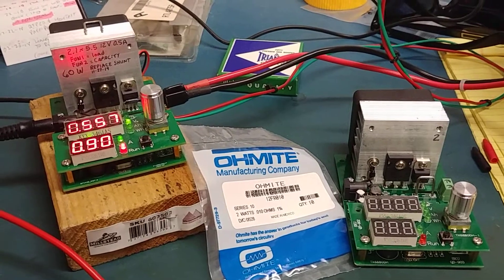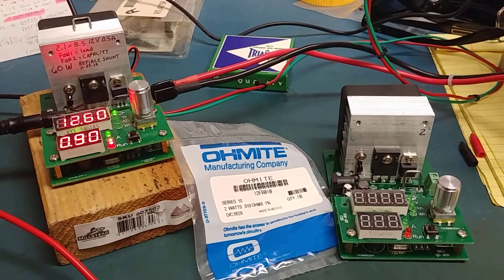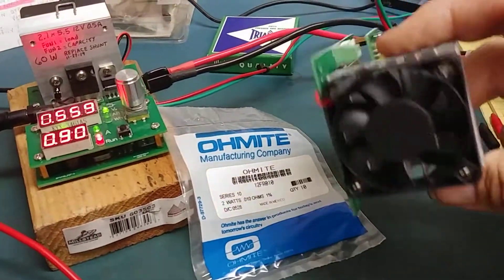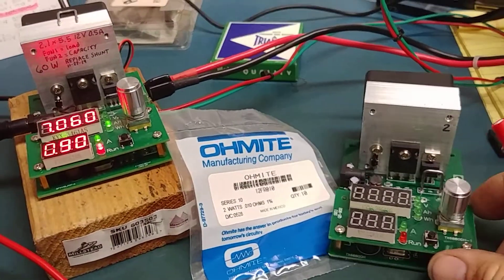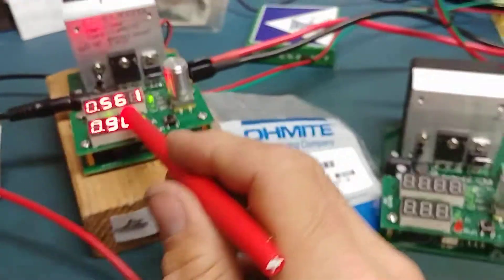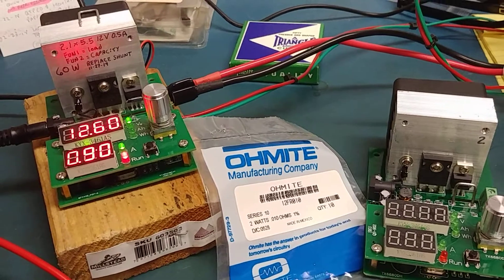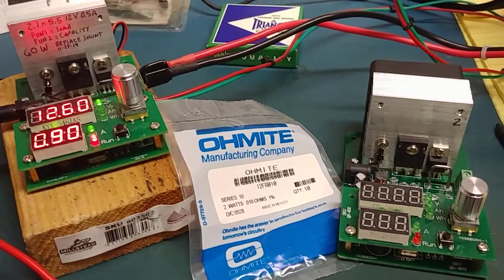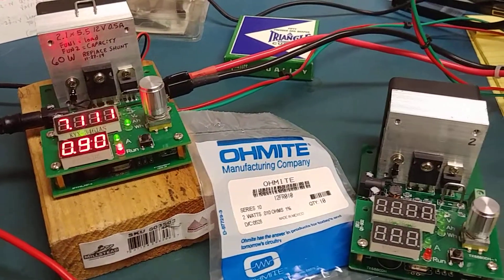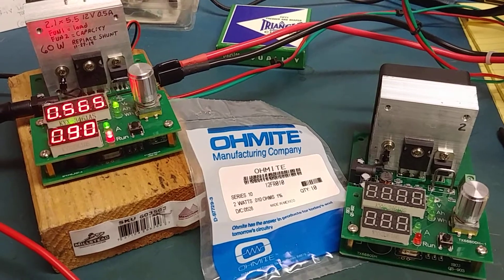These things are pretty cool. For $16 it's unbelievable what you get. These little things right here. You can set the current draw, you can set the voltage to finish, and they will run by themselves and shut off and give you an alarm and show you what the amp hour capacity of the battery is.